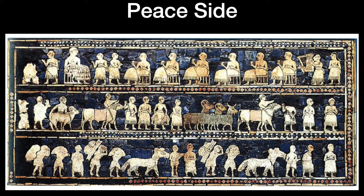The peace side shows gifts being brought to the ruler for the afterlife. At the very bottom, men are carrying provisions — maybe spoils of war, prizes, plunder. In the middle there are animals, which could also have been spoils of war, and fish. They will be celebrating a great banquet depicted in the uppermost section, where they have a giant feast with the king. The interpretation is a victory celebration and banquet.